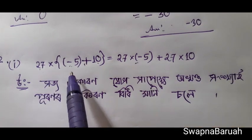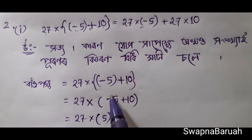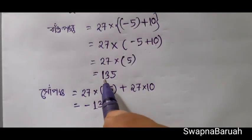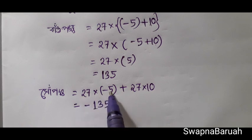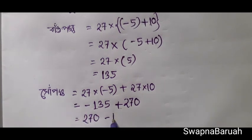Now I need to verify this. I'm going to write 27, minus 5 plus 10. I'm going to write 27. I'm going to write 135. We are going to write 27. 27 and 10 of product is 270.